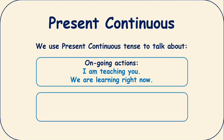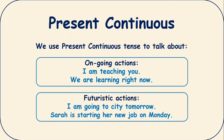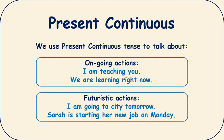Number two use is futuristic actions. For example, I am going to city tomorrow, or Sarah is starting her new job on Monday. Although we are talking about the future, we are going to use present continuous structure to refer to that future action. I am going to city tomorrow — that's something I'm going to do tomorrow, but I can say it in present continuous. The meaning is the same.